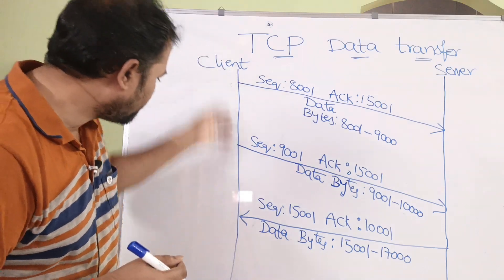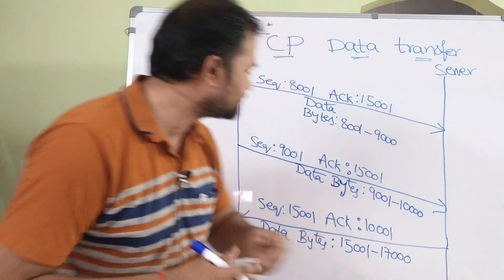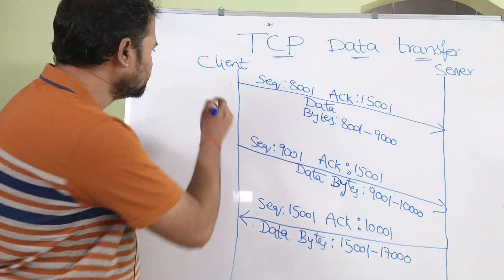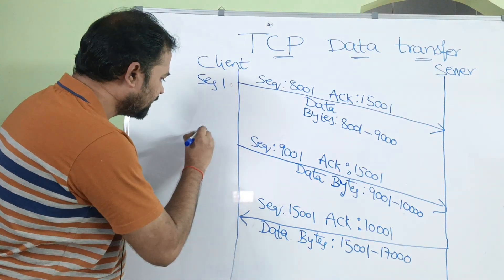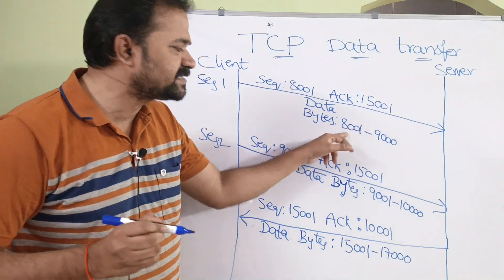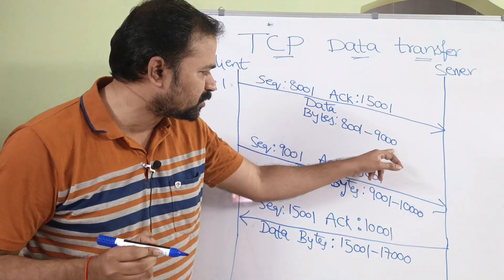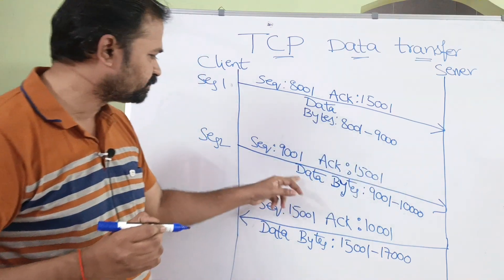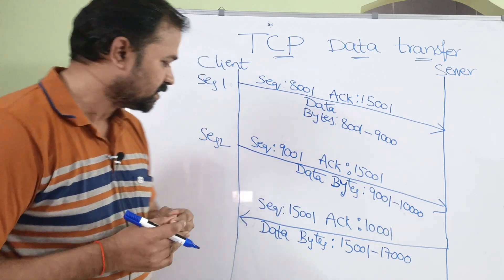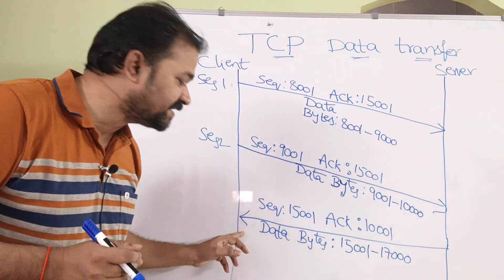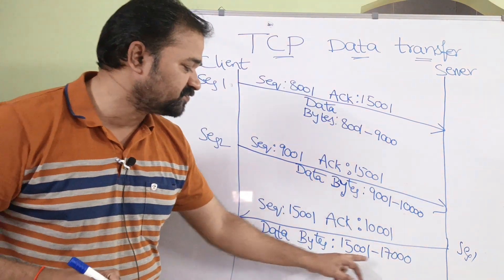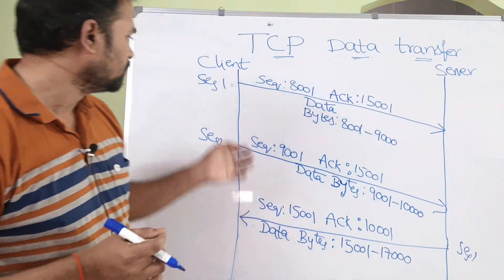Here, this part represents the client and this part represents the server. The client is sending two segments — segment 1 and segment 2 — where each segment size is 1000 bytes (8001 to 9000 and 9001 to 10000). The server is sending one segment where the size of that segment is 2000 bytes.